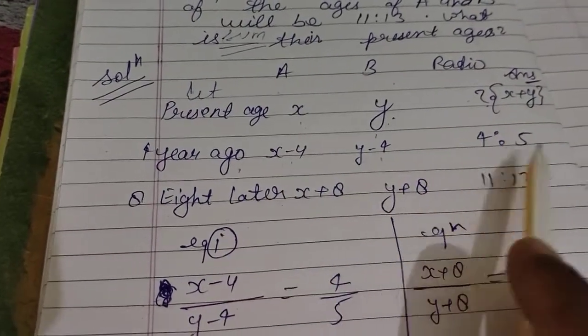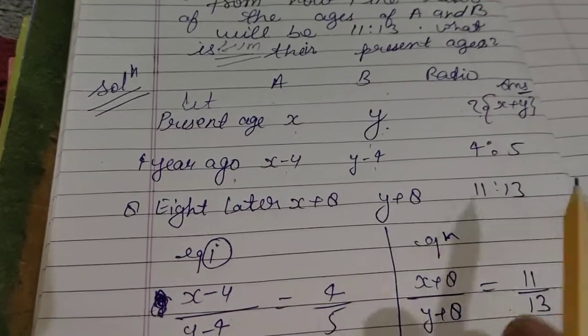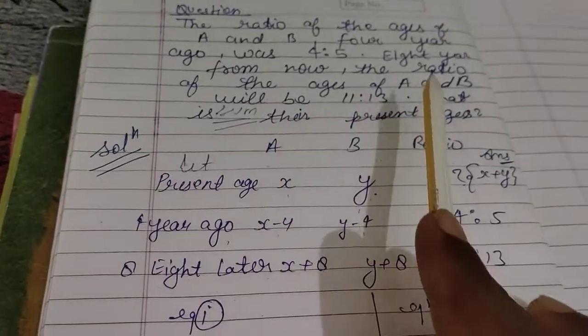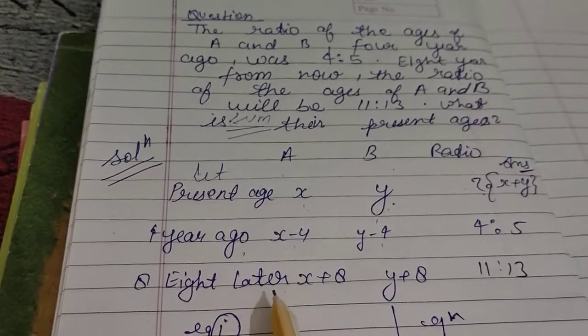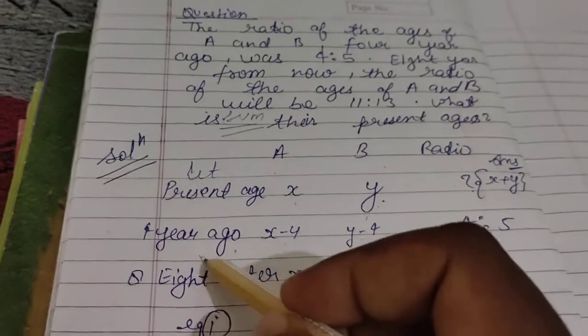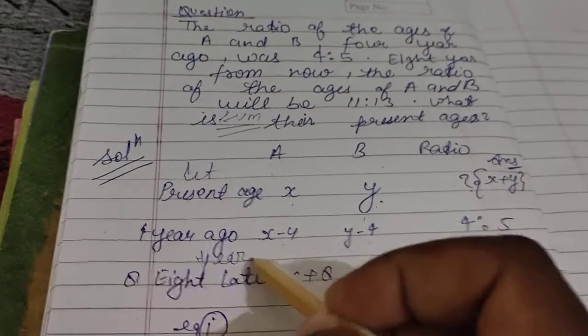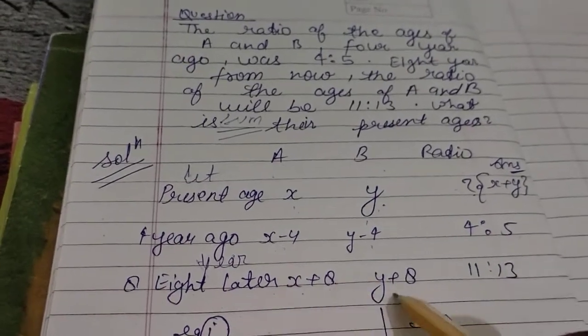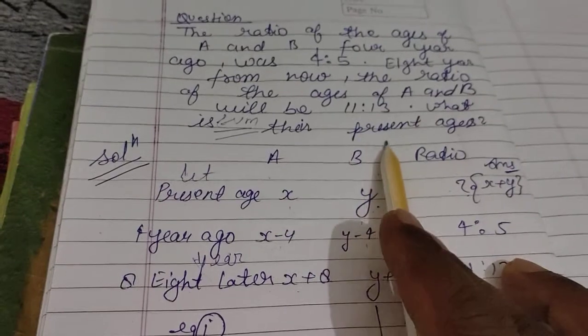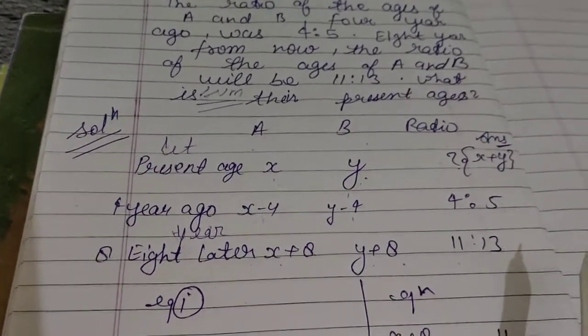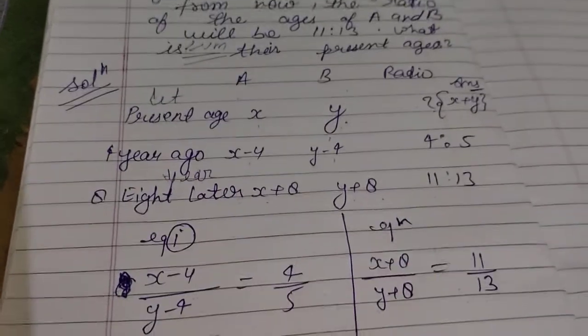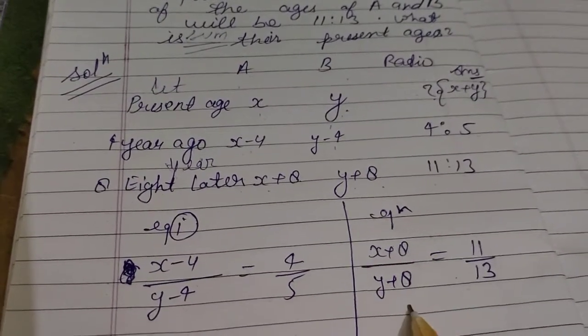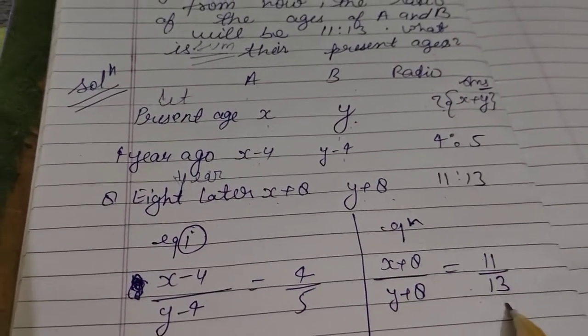Eight years later, the ages will be x+8 and y+8. The ratio will be 11:13, so we write the equation: (x+8)/(y+8) = 11/13.